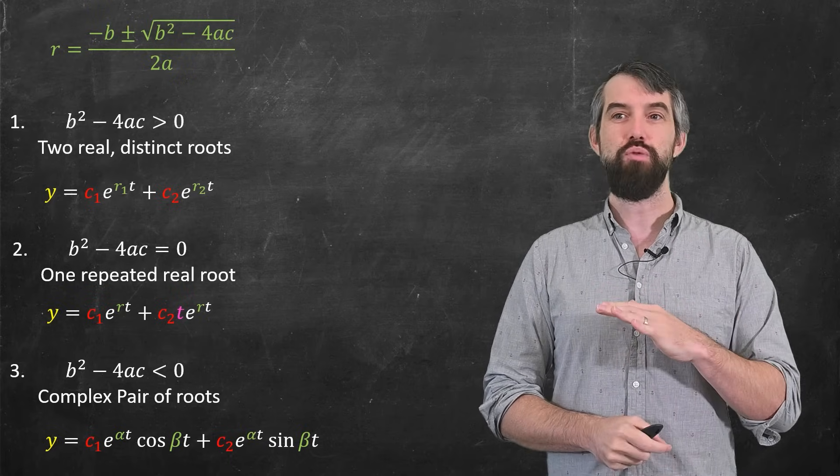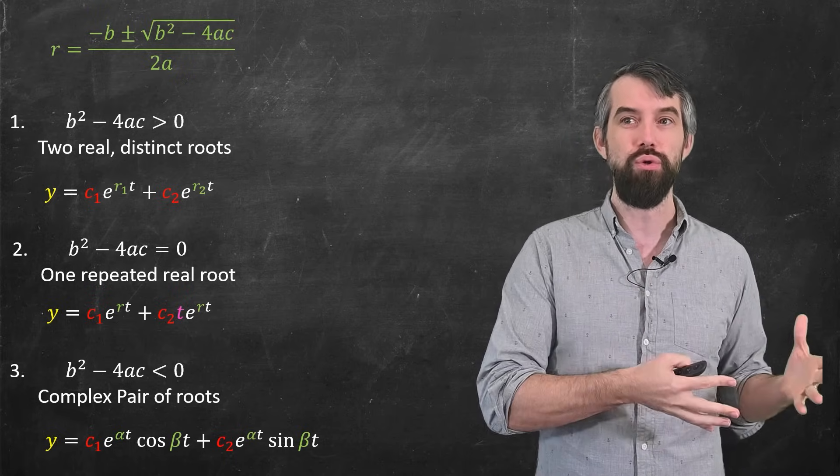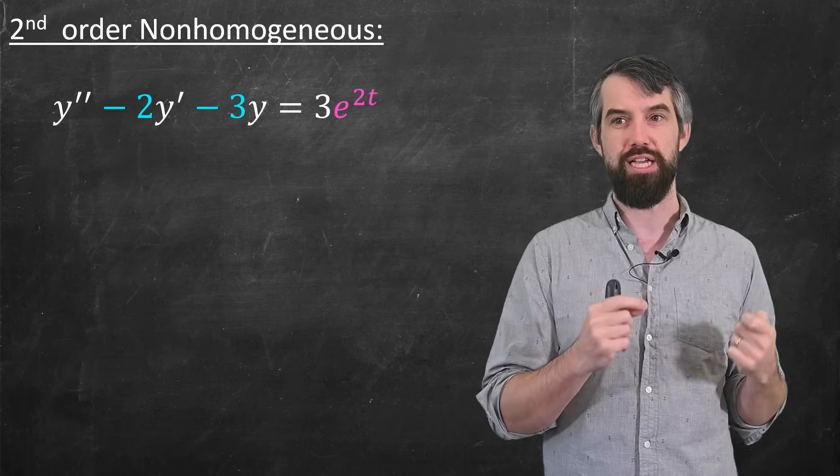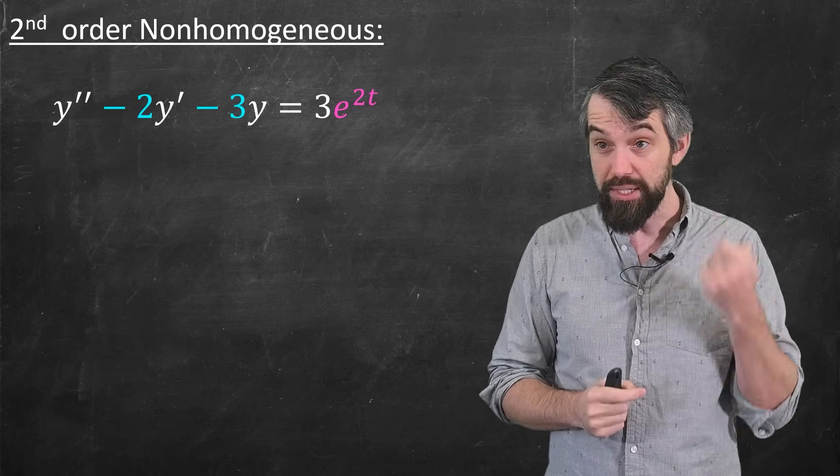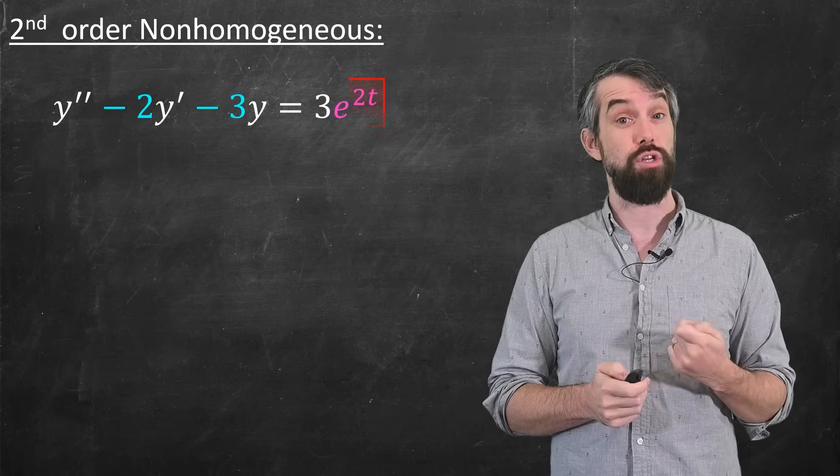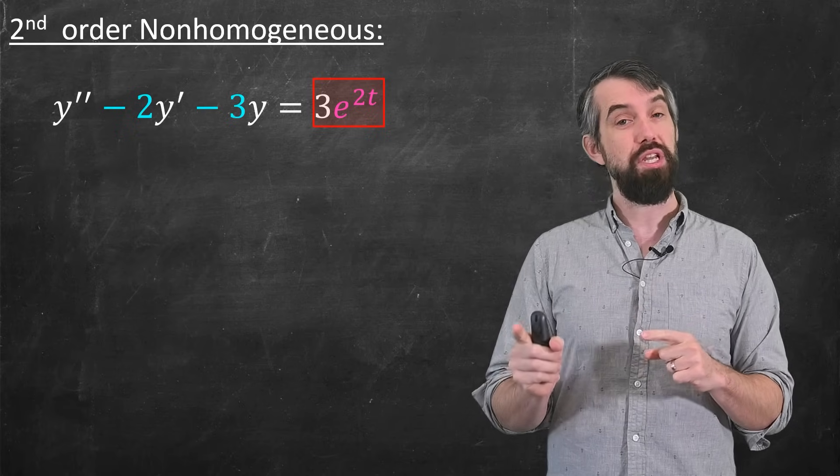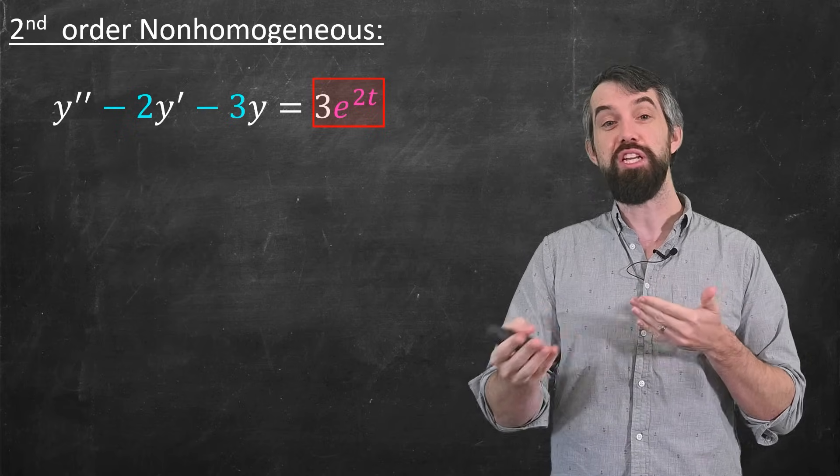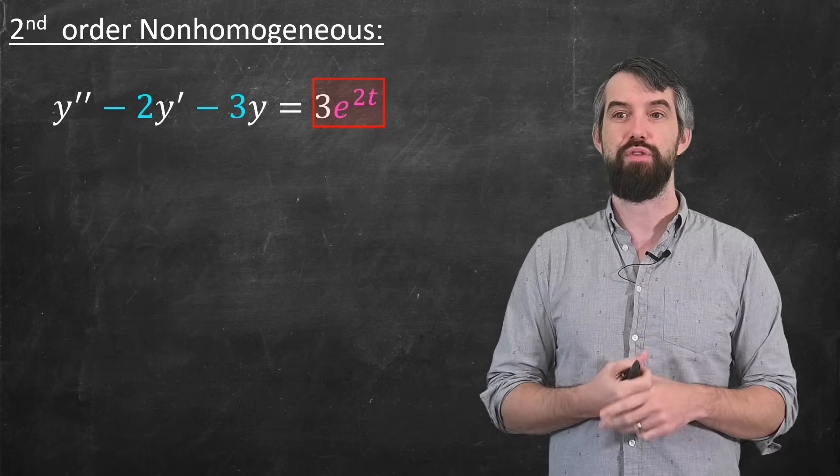In fact, the constant coefficient homogeneous case is used when it's non-homogeneous as well. So now instead of being equal to 0, I've got it equal to 3e to the 2t. And basically, the methodology for the non-homogeneous case is to break it up into a few things.